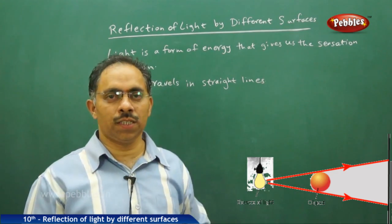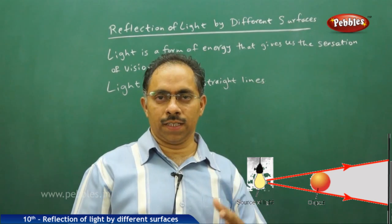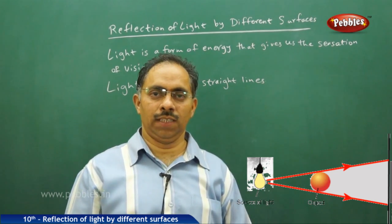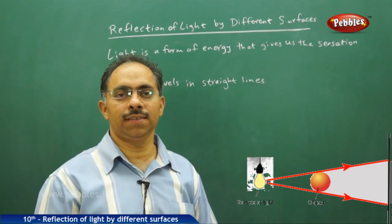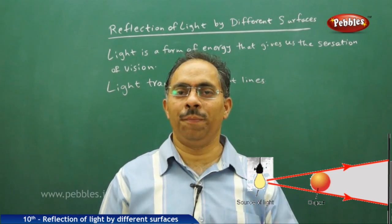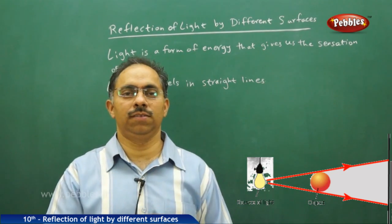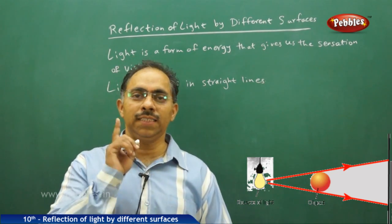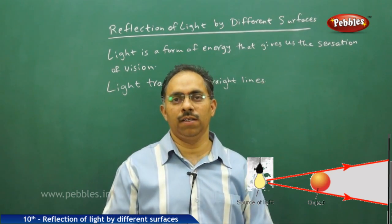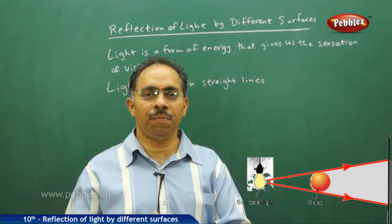With regards to the propagation of light through a body, we have three types of bodies: one is transparent, second is translucent, third is opaque. Transparent bodies are bodies which will allow 100% of the incident light to pass through them.